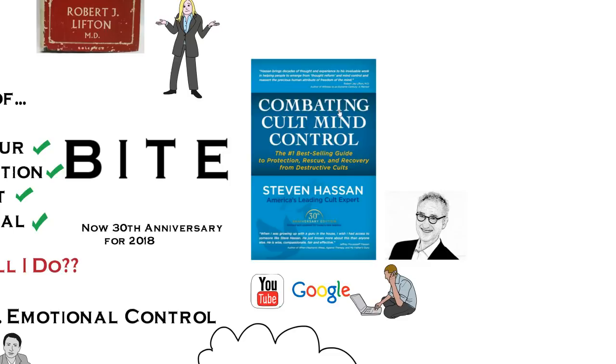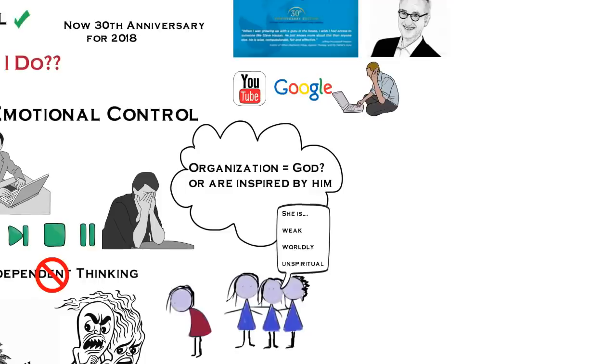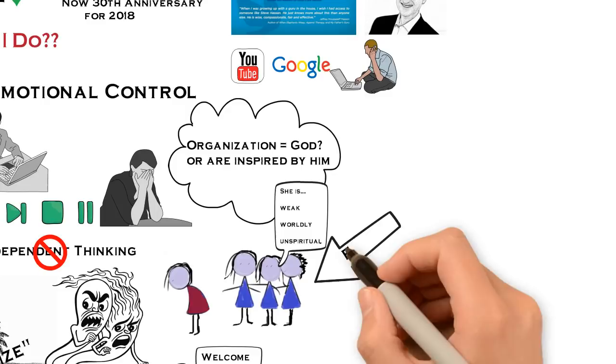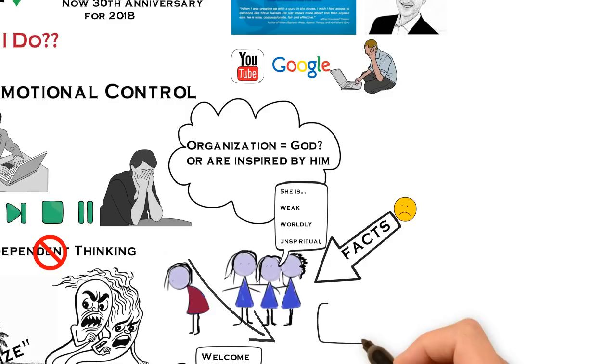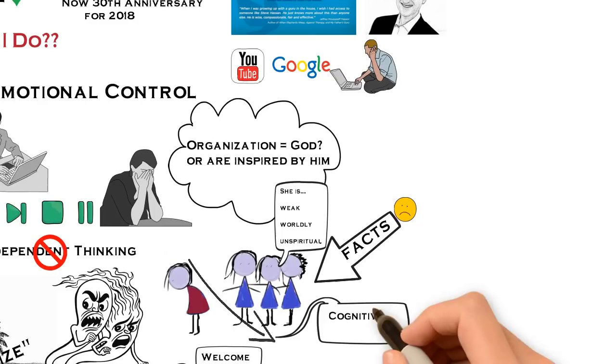This is what cognitive dissonance is all about—our minds don't like to be confronted with conflicting ideas. Look it up. Look up cognitive dissonance; it's a very interesting subject all on its own. So if you want to understand and know more about cults and mind control, the key is understanding mind control itself.